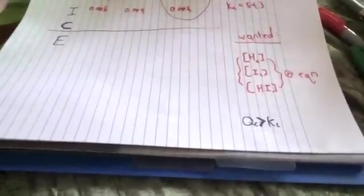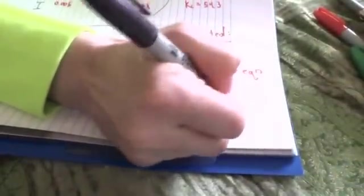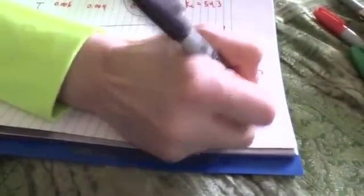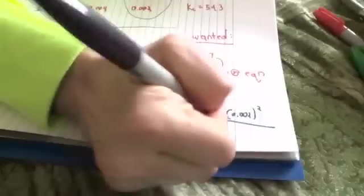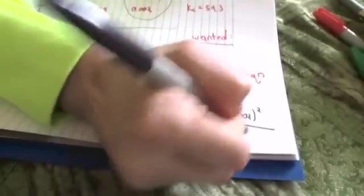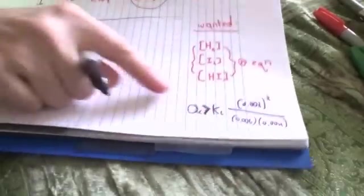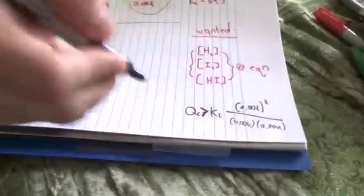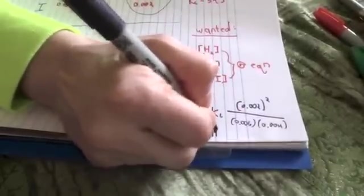In order to find my reaction quotient, I'm going to take the concentration of the product, which is 0.002 squared, divided by, I don't even know where to write it. I'm going to put it over here in the corner. I'm going to put 0.002 squared, divided by the concentration of reactants, 0.006 and 0.004. And for Qc, what I wind up getting is Qc equals 19, that's a 19.5.